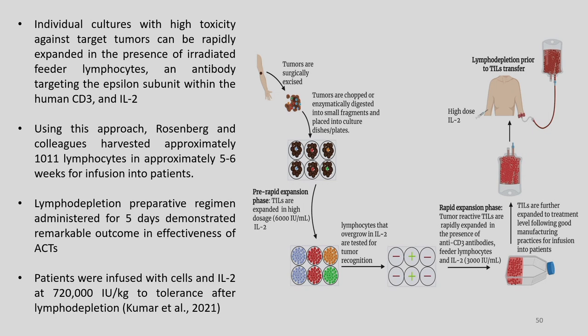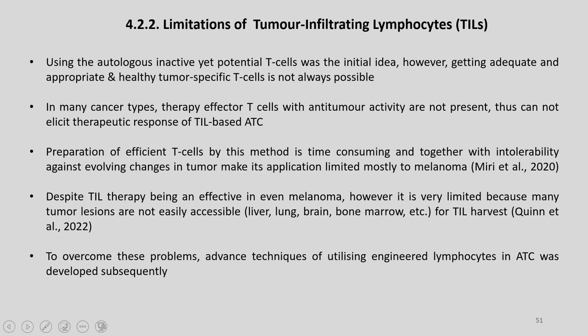Using this approach, Rosenberg and colleagues harvested approximately 10^11 lymphocytes in approximately 5 to 6 weeks for infusion into patients. The lymphodepletion preparative regimen administered for 5 days demonstrated remarkable outcomes in the effectiveness of ACTs. Patients were infused with cells and interleukin-2 at 720,000 IU per kg to tolerance after lymphodepletion.